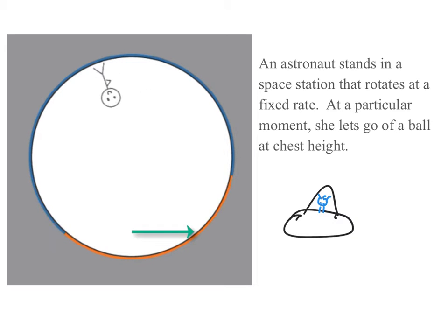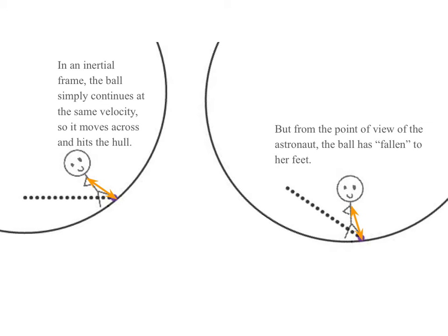It's very different from her viewpoint. Her brain doesn't really believe that she's accelerating — our brains never do. In the inertial frame, the ball simply continues at the same velocity, traveling in a straight line at the same speed. But from her point of view, she's not accelerating, she's not rotating. Instead, she sees the ball fall at her feet. It starts here and ends here, and she says this must be the direction of the force on it. She doesn't see all these dots because for each of them, her head is tracking out the circle as well, so she's always seeing the ball directly below her.